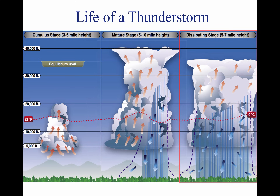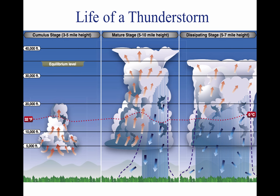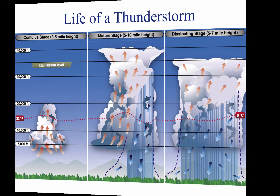Flying under thunderstorms can subject aircraft to rain, hail, damaging lightning, and violent turbulence. A good rule of thumb is to circumnavigate thunderstorms identified as severe or giving an intense radar echo by at least 20 nautical miles, since hail may fall for miles outside the clouds. If flying around a thunderstorm is not an option, stay on the ground until it passes.